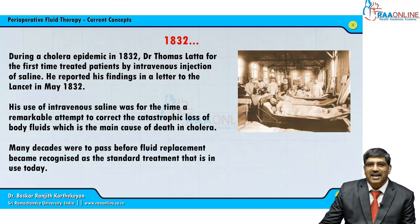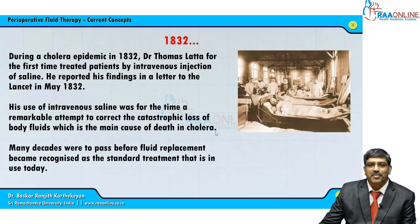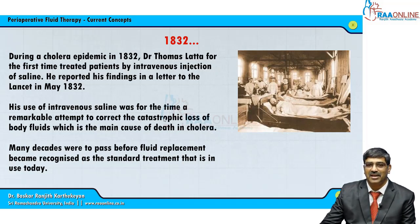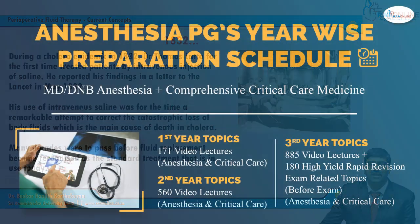It all started in 1832 when Dr. Thomas Latta found that a lot of people were dying from cholera due to fluid imbalance — a lot of fluid was lost and patients died due to dehydration. So he started injecting intravenous saline in 1832 and saved many patients.